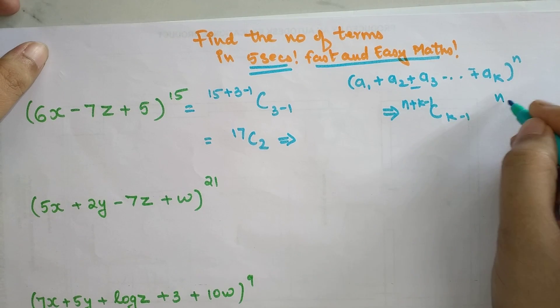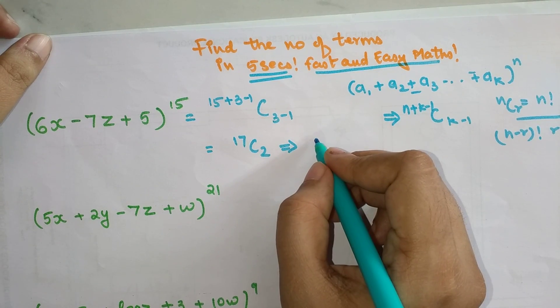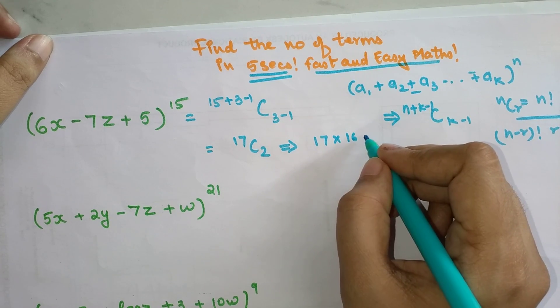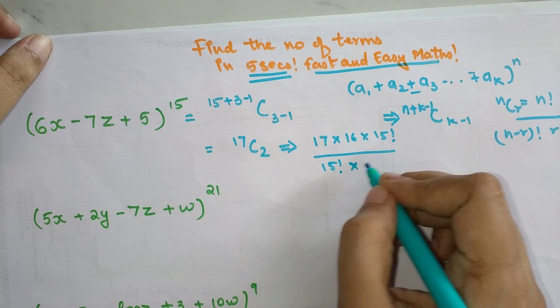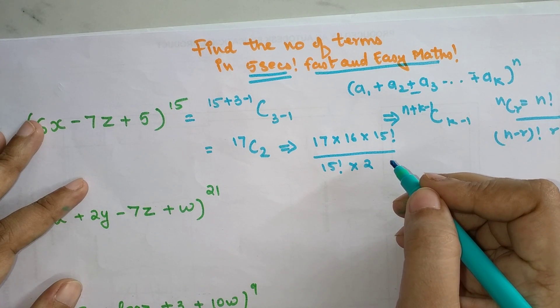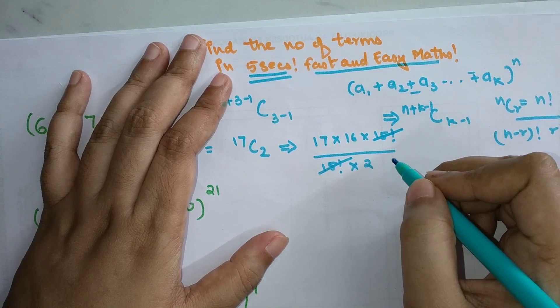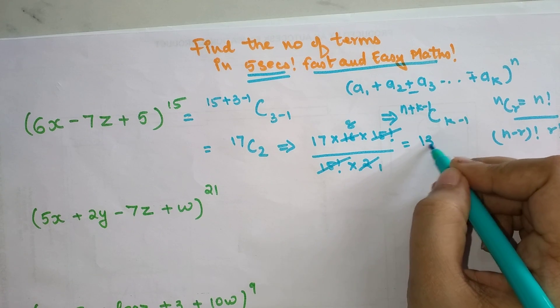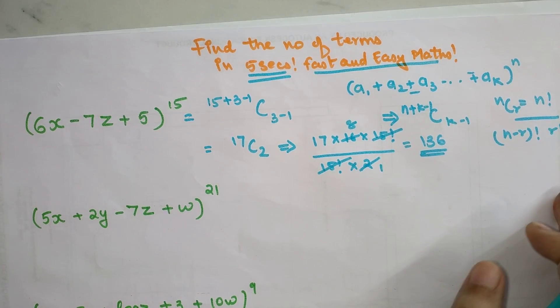If you don't know how to solve nCr, that is nothing but n factorial upon (n-r) factorial and r factorial. So here we have 17×16×15! (I've just written till 15 because 17-2 is 15) factorial upon 15!×2. When I do that, my 15! and 15! get cancelled, and 2 ones are... 2 eights are... 17×8 is nothing but 136. That's it, that's how we found the answer.